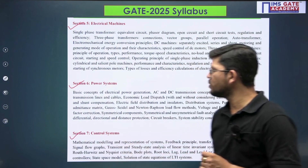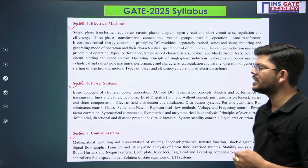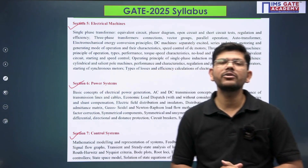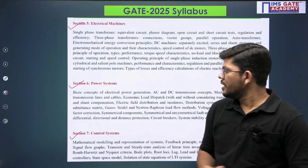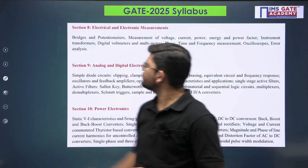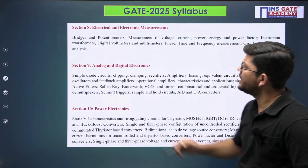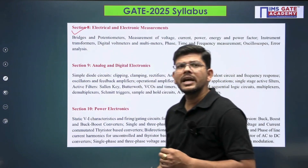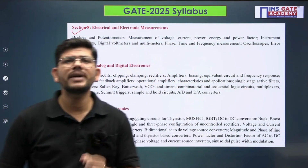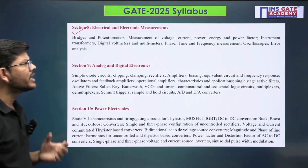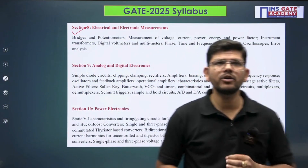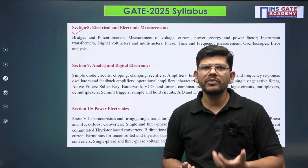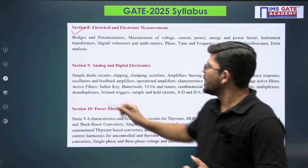In section number seven, we have Control Systems — covering time-domain analysis, frequency-domain analysis, and state-space analysis. In section number eight, we have Electrical Measurements, which includes bridges and potentiometers, and measurement of voltage, current, power, energy, and power factor. CRO and error analysis are also important topics that have appeared in previous years.